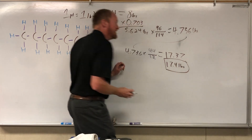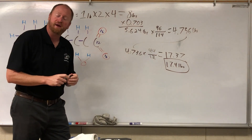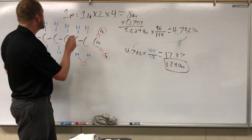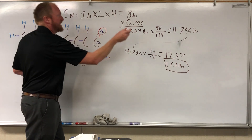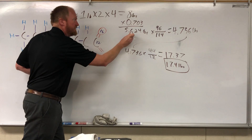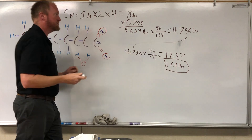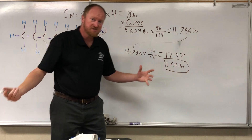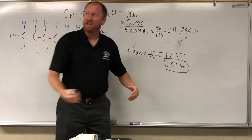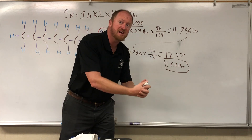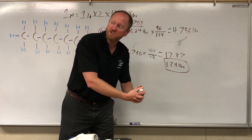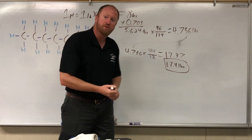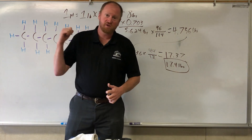Burning one gallon of gasoline, you get 17.4 pounds of carbon dioxide. That's a little strange when you think about it, because before you burned the gasoline it was 5.624 pounds — and now after burning it, it's heavier. Well, think about it: your car isn't just taking in gasoline. It's also got a carburetor that's taking in oxygen, and that oxygen has weight. That's where the bulk of the weight is coming from, and that doesn't even include the water vapor.